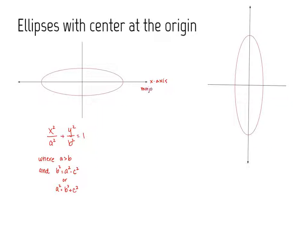The relationship between a and b is that a is always greater than b, and b squared equals a squared minus c squared. Another way of saying this same expression would be a squared equals b squared plus c squared.